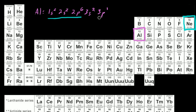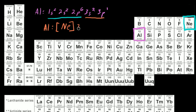Yes, we can do exactly that. We write that aluminum's electron configuration is going to be the same as neon — we put neon in brackets — and then we just add on the extra electrons beyond what neon has: 3s2, 3p1. That's another way of writing aluminum's electron configuration, and you can see it saves a lot of space. That's essentially why you do it.